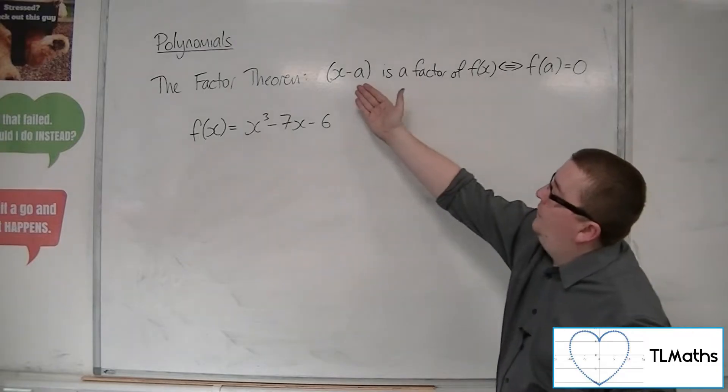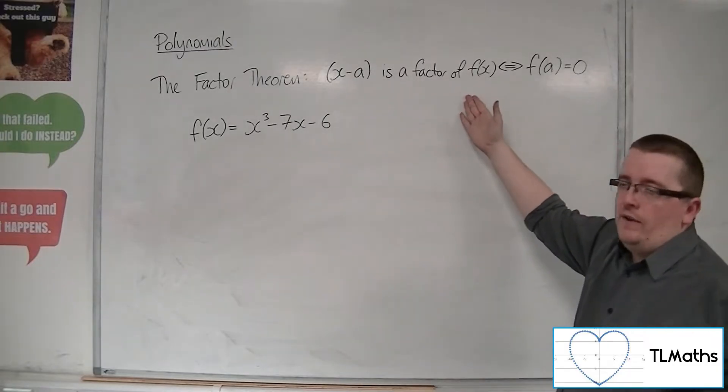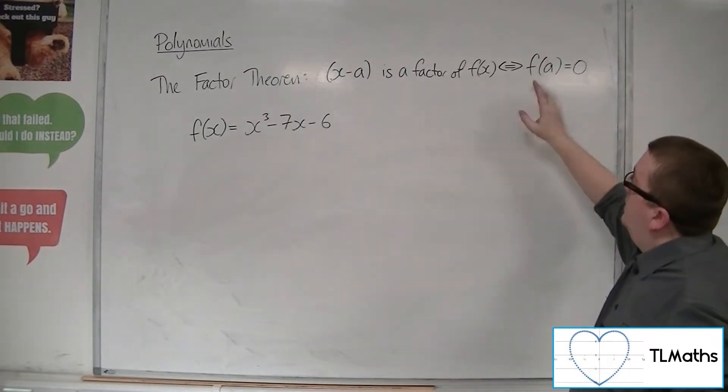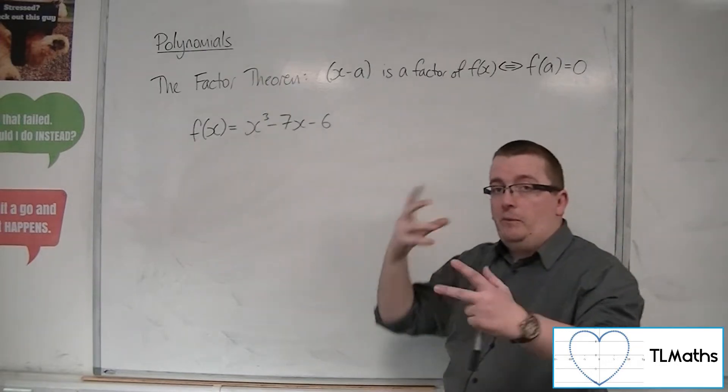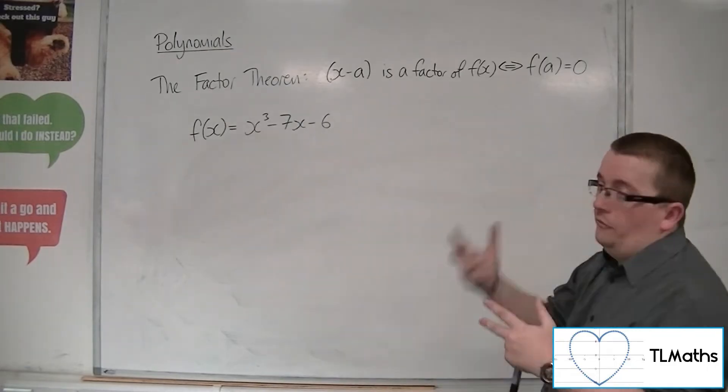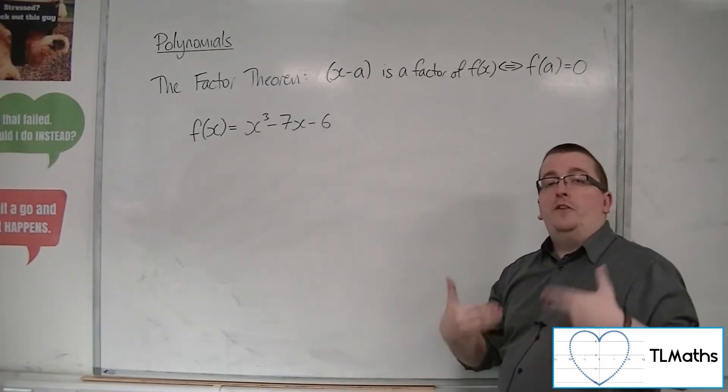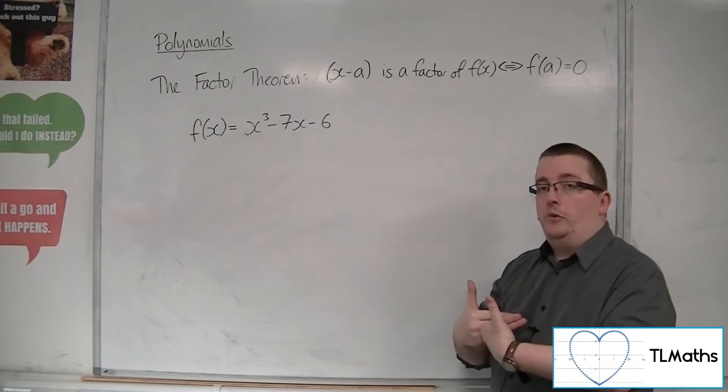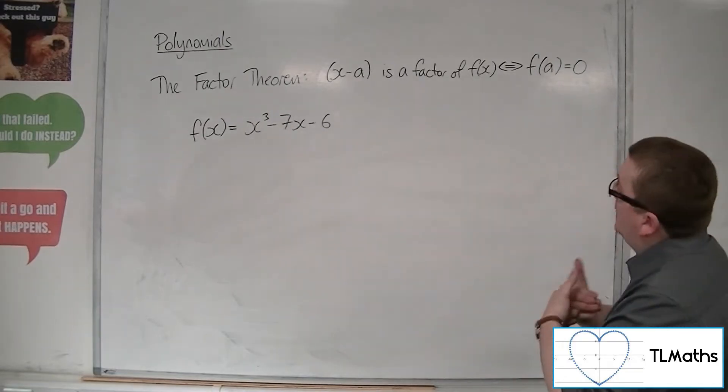So if we know that x minus a is a factor of f of x, then f of a is 0. If I substitute a in, I get 0. So let's say, for example, x minus 2 is a factor. Then I know if I substitute in positive 2 into the function, I will get 0.